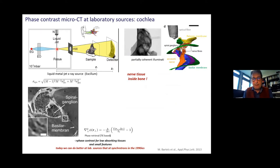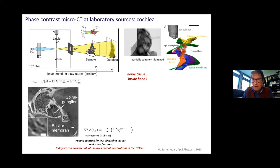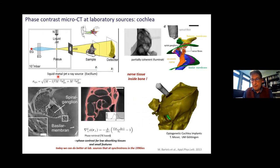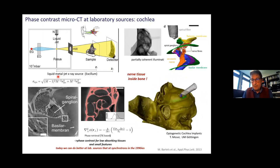An important application was development of optogenetic implants with Tobias Moser's group in Göttingen. The challenge was to see nerve fibers, tissues, and membranes within the bony environment of the cochlea. With sufficient understanding of resolution and instrument performance, you can go from barely seeing soft tissue to sharply resolving it and automatically segmenting by gray value — image quality scales everything.